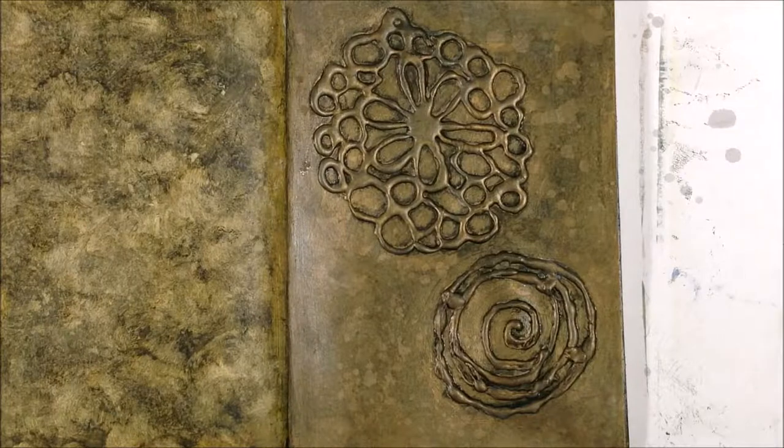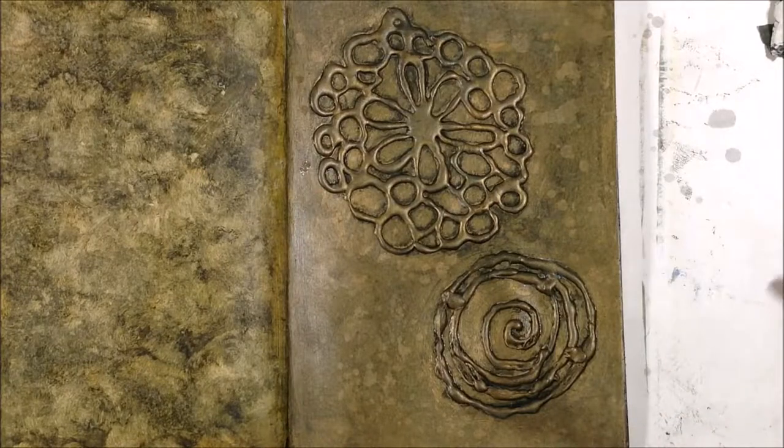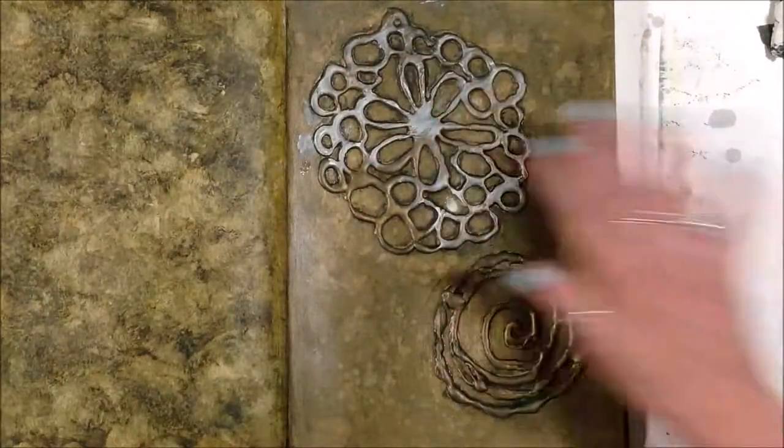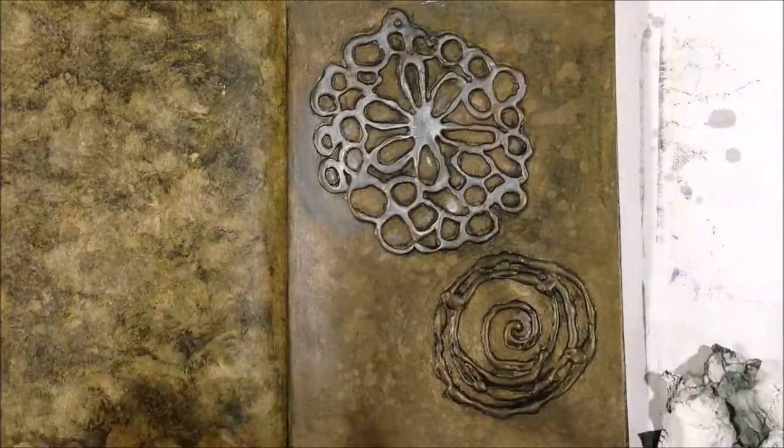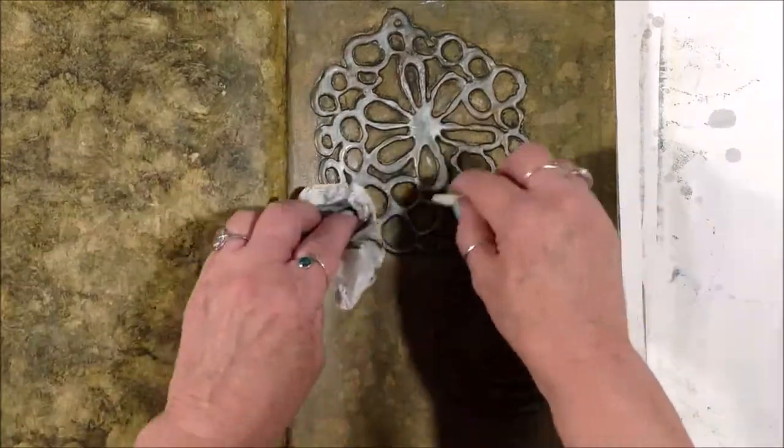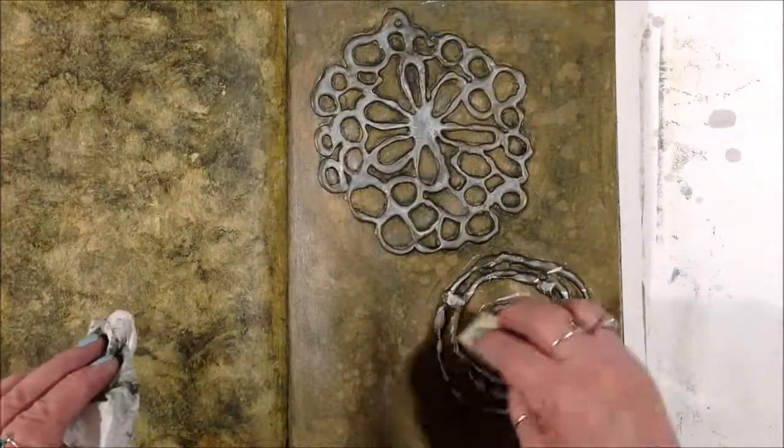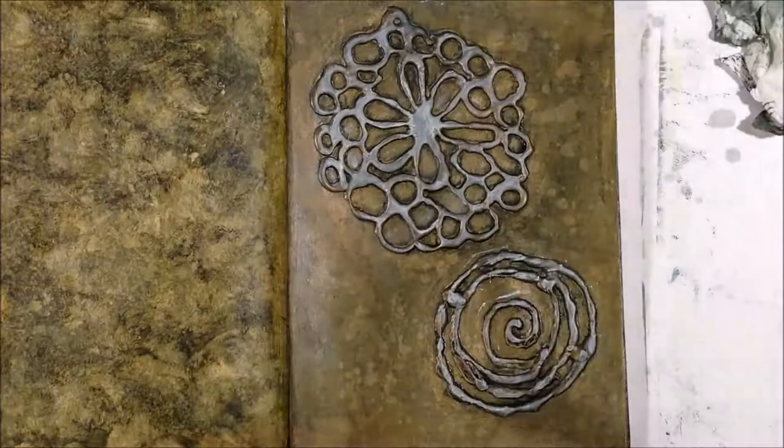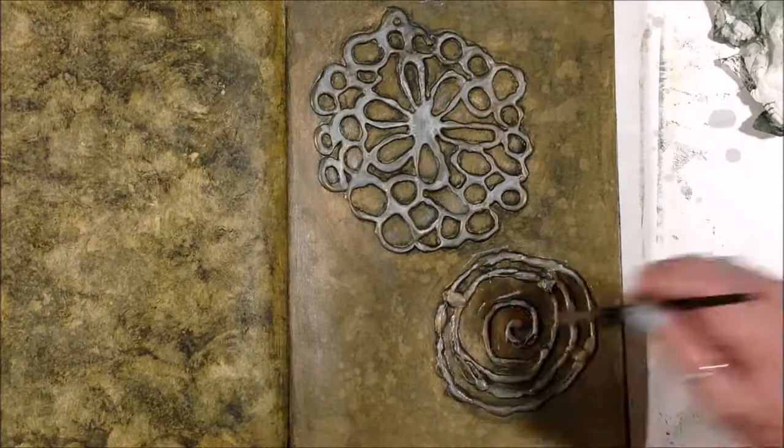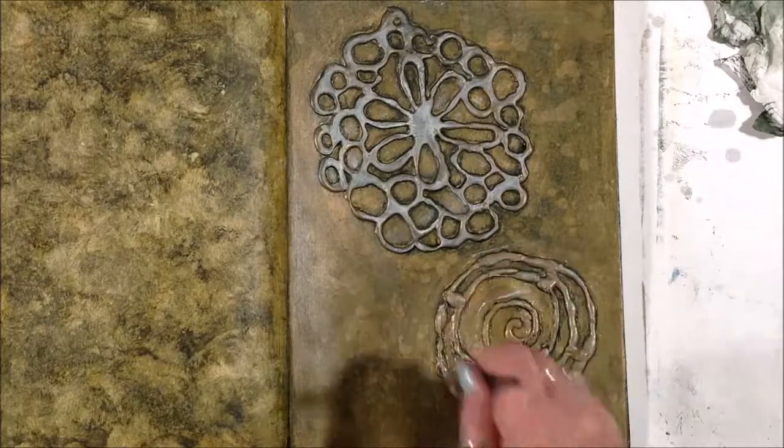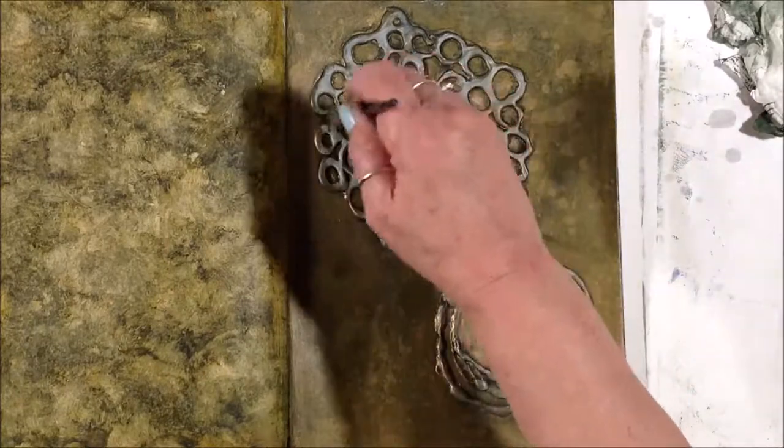And I decide I want to lighten up the gold that's on the glue shapes. So I'm just on my finger taking some Titan Buff fluid acrylic and going over the shapes to kind of give them a lighter appearance. And then I'll recoat them with the gold in an effort to try to kind of lift them up. I didn't want to combine the paints to mix the two, the white and the gold or the Titan Buff in the gold because I thought it would alter the amount of metallic look that I would get out of the gold paint. So that's why I did it this way.